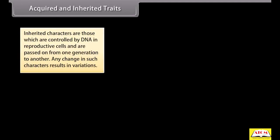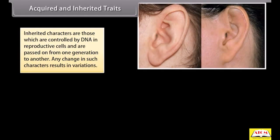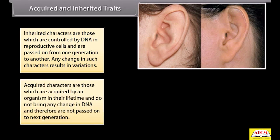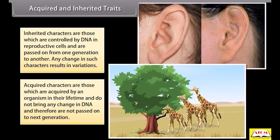Inherited characters are those which are controlled by DNA in reproductive cells and are passed on from one generation to another. Any change in such characters results in variations. Acquired characters are those which are acquired by an organism in their lifetime and do not bring any change in DNA, and therefore are not passed on to the next generation.